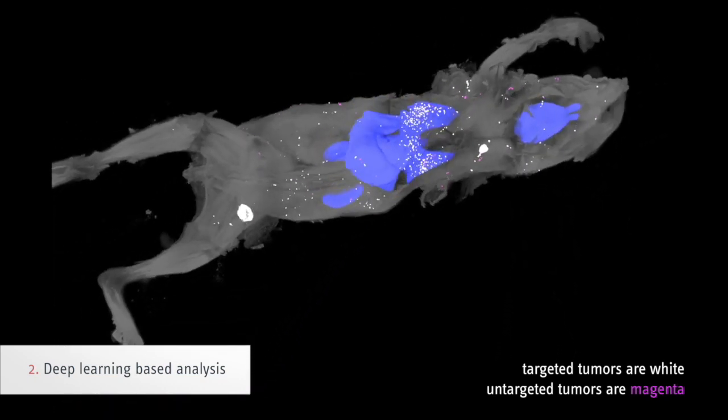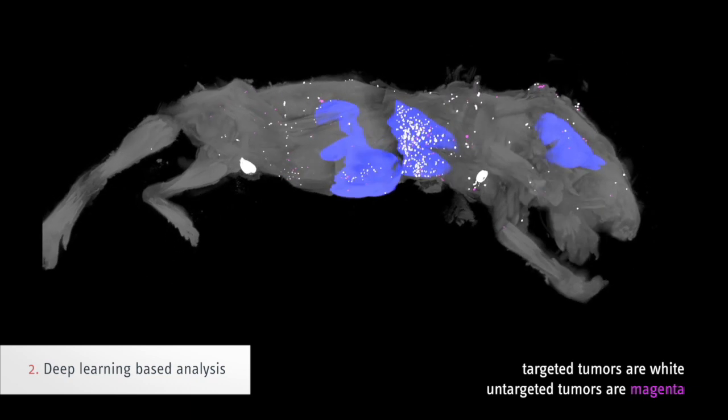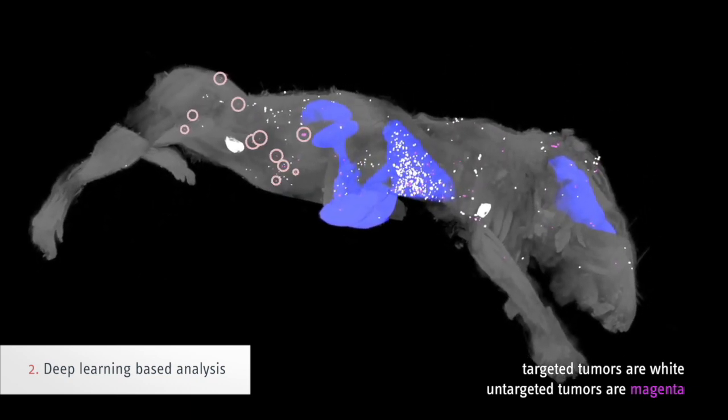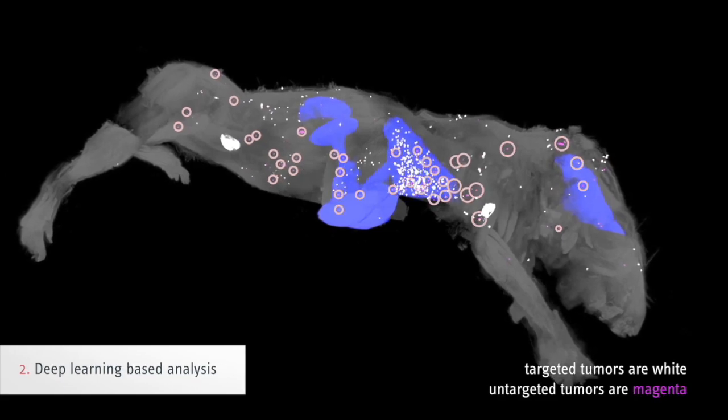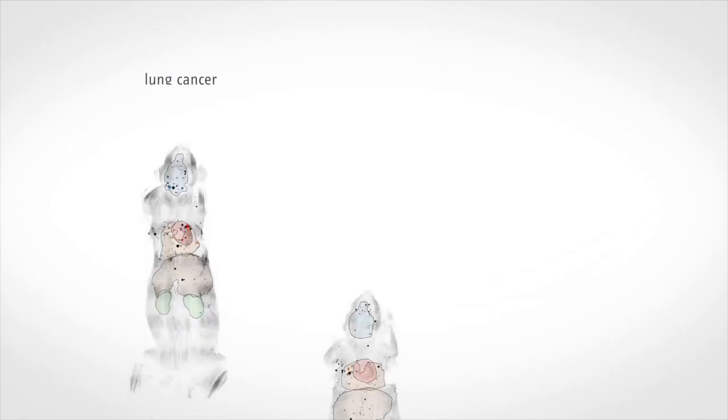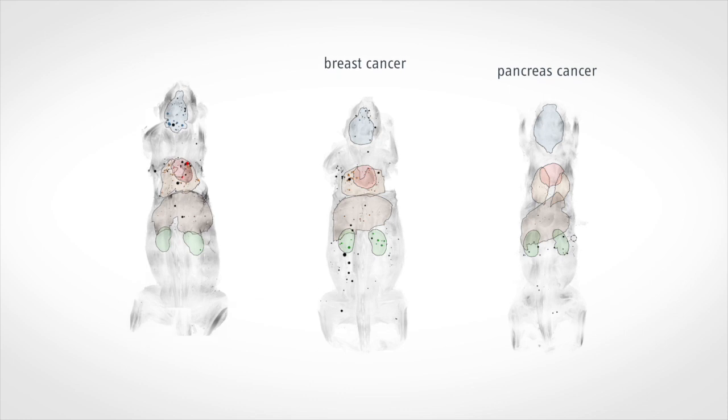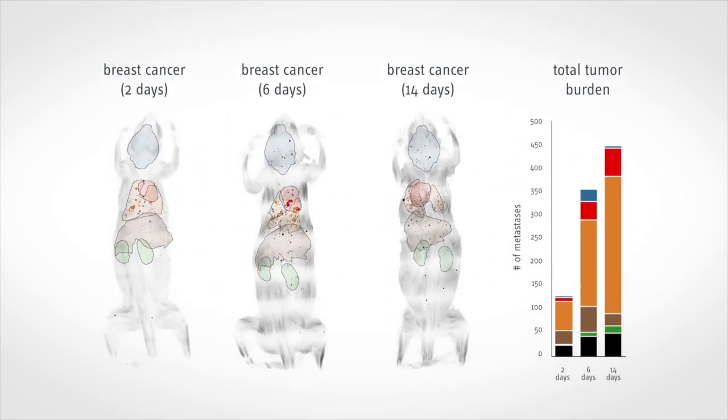These analyses showed that the antibody-based drugs, which are among the most effective treatments available, can miss as many as 30% of the small metastases. We analyzed metastatic spread in lung, breast, and pancreatic cancer models using this new technology. It also enabled us to observe how the metastases spread through the body at different time points.